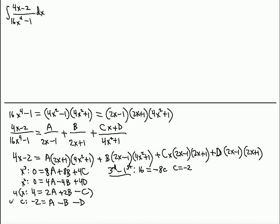Similarly, there is -4A - 4B in the x² equation. We can multiply the constant equation by 4, then subtract (fourth minus second equation) so A and B cancel. We get -8 = -8D, so D = 1.